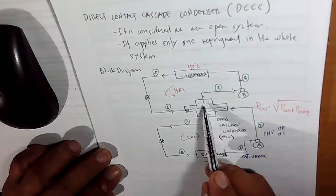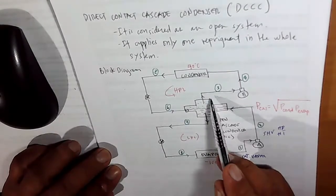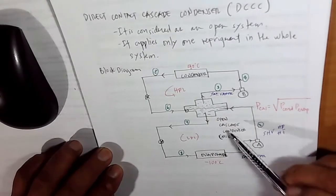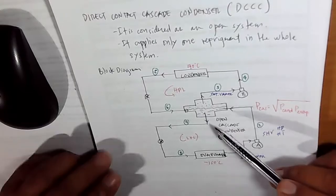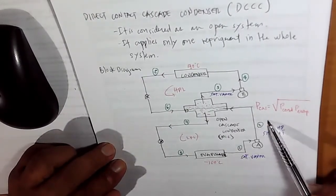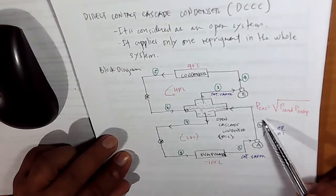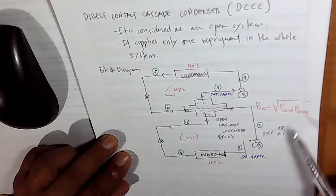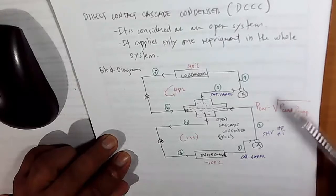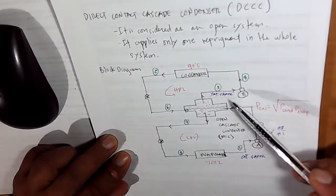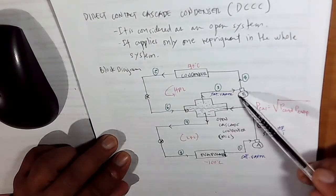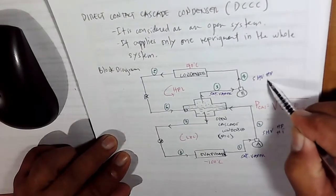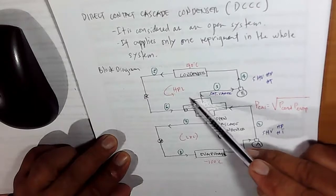Upon its exit from the cascade condenser, at point 3 it is once again saturated vapor. The pressure at this point corresponds to your cascade condenser. If the cascade pressure is not given, the pressure of the cascade condenser is equal to the square root of the condenser pressure multiplied by the evaporator pressure. The saturated vapor, whose pressure corresponds to the cascade condenser, will go to your compressor and be compressed once again, converting it into superheated vapor — high pressure, high temperature — at high pressure loop condition.